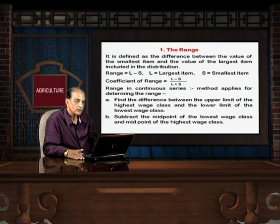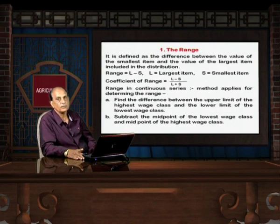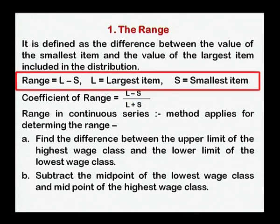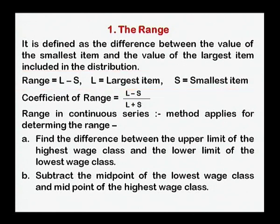First, I would like to discuss the range method applied for measurement of dispersion. It is defined as the difference between the value of the smallest item and the value of the largest item included in the distribution. We have to find out the smallest value and the largest value of the item and find the difference. So range = L − S, where L refers to the largest value and S refers to the smallest value. This gives an idea of how values in the table are variable and how scattered they are.